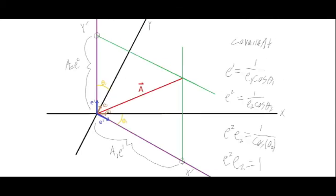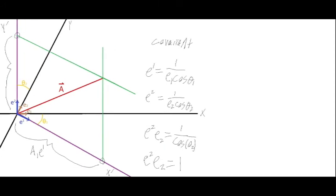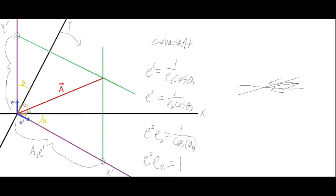The reason we call these covariant and contravariant is related to this behavior. If we take the y-axis and keep moving it toward the x-axis so the angle becomes smaller, we can see that the contravariant components keep getting smaller and smaller, because the projections go parallel to the axes and those shadows shrink toward zero as we close the axes together.